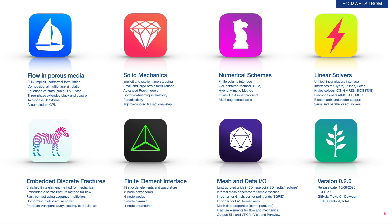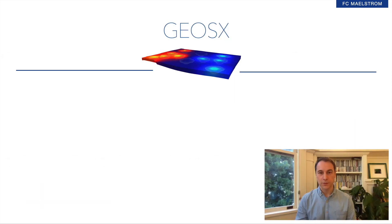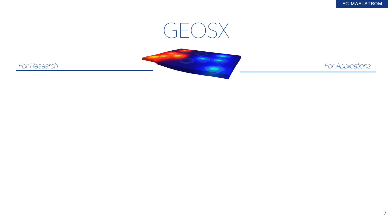Currently, we're at version 0.20, released and announced at the end of last year. As you can see, this is really just the beginning of the story. If we look beyond functionalities, GEOS-X is designed to do two things really well: research and industrial applications. On the research side, about 19 journal publications were published since 2019 using technologies inside GEOS-X.